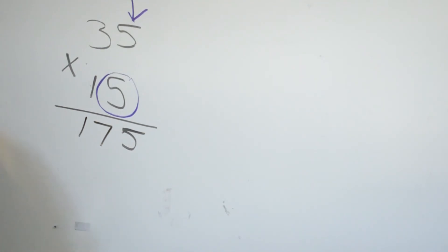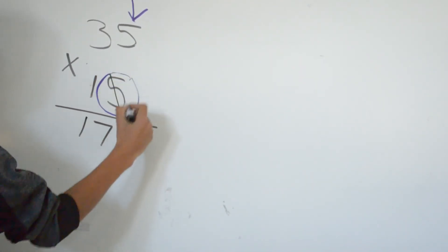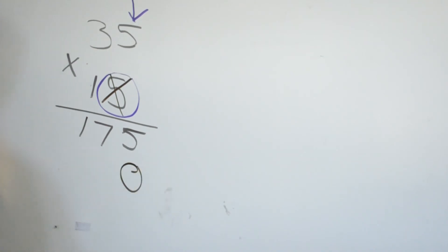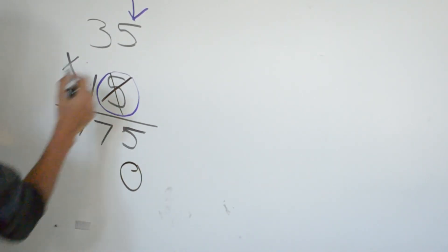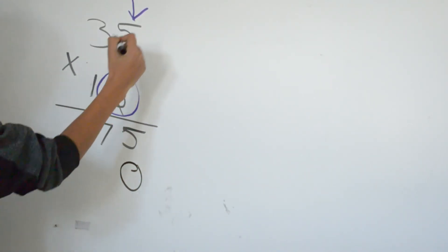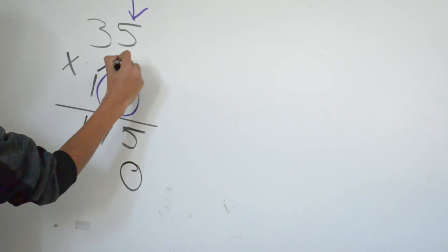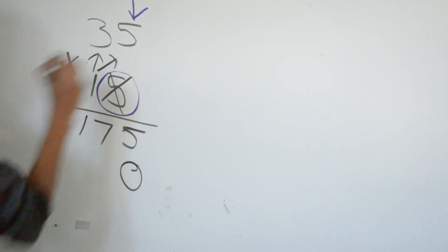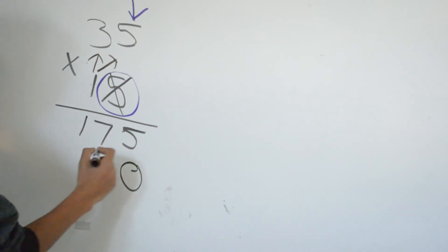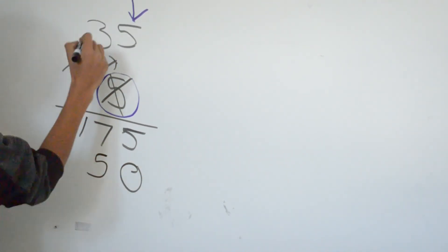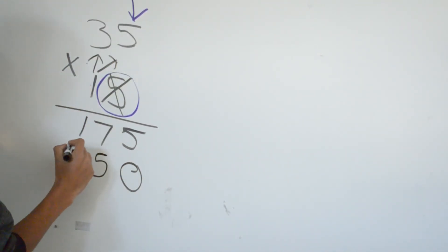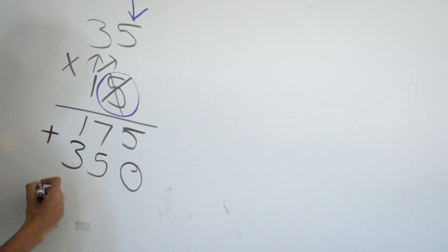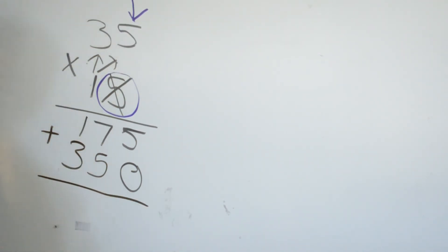Now we cross off the 5 and we add a 0. Now we multiply: 1 times 5 and 1 times 3. 1 times 5 is 5. 1 times 3 is 3. We add them to get our final answer.